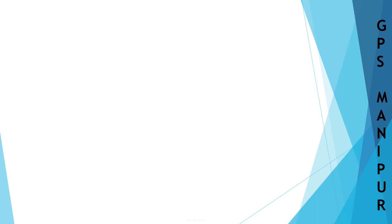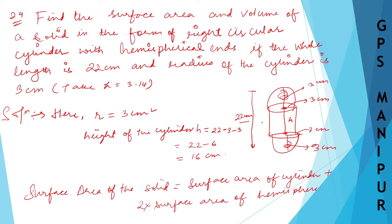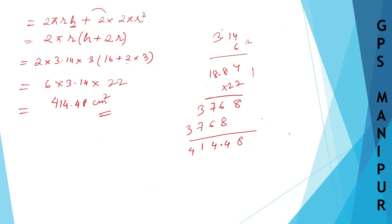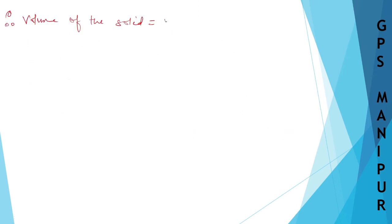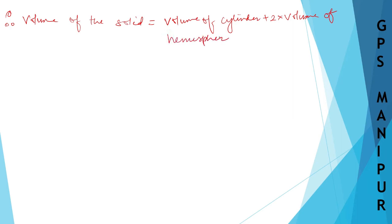Now I need to find the volume. Volume of the solid equals the volume of the cylinder plus 2 into the volume of the hemisphere. Volume of the cylinder is πR²H, plus 2 into the volume of the hemisphere, whose formula is 2/3 πR³.